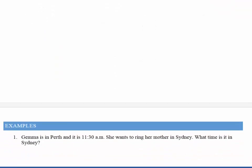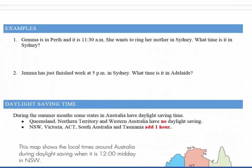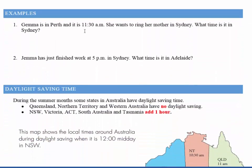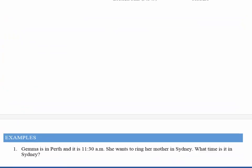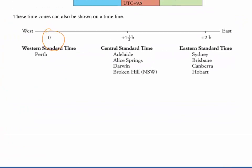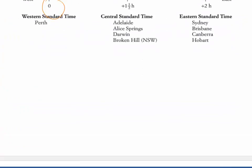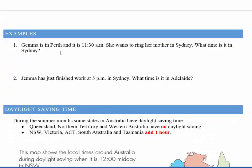Gemma is in Perth and it's 11:50 a.m. She wants to ring her mother in Sydney. What is the time in Sydney? It's two hours further ahead in Sydney, so starting at 11:50 and adding on two hours gives us 1:30 p.m. in Sydney.